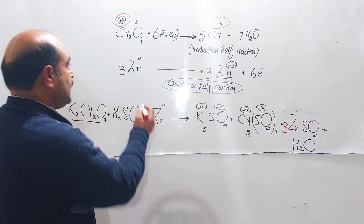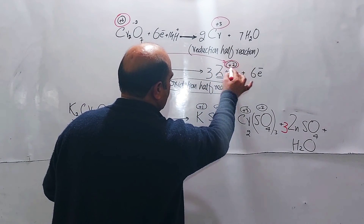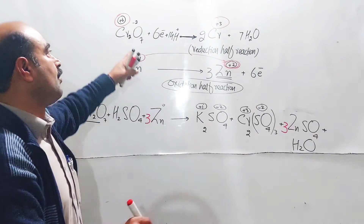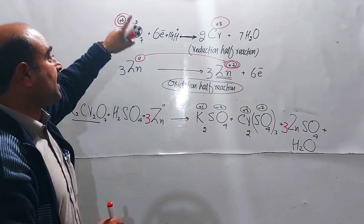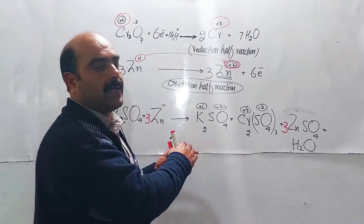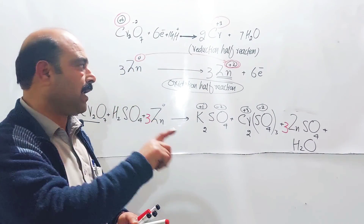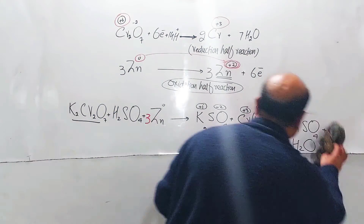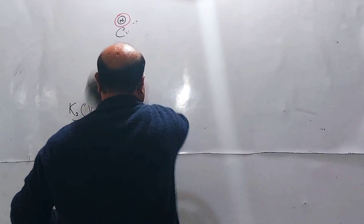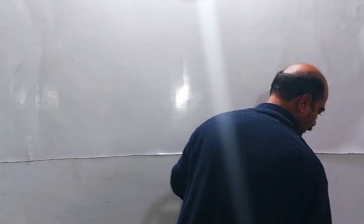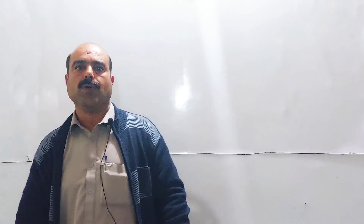Zinc is oxidized — the oxidation state is increased, and increase in oxidation state is known as oxidation. Dichromate ion, specifically chromium in potassium dichromate, is the oxidizing agent — it gains electrons and is reduced. This was all about the reduction of dichromate ion by zinc. Students, the next video will cover potassium dichromate as an oxidizing agent in organic chemistry, and in titration. Thank you.